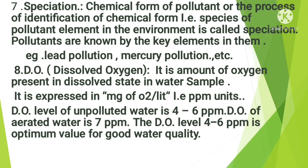The next term is dissolved oxygen (DO). Dissolved oxygen is the amount of oxygen present in dissolved state in a water sample. DO level is expressed in mg of O₂ per liter, which is ppm (parts per million). The DO level of unpolluted water is 4–6 ppm, and for aerated water it is 7 ppm. DO is an important parameter of water quality and is essential for healthy aquatic life.